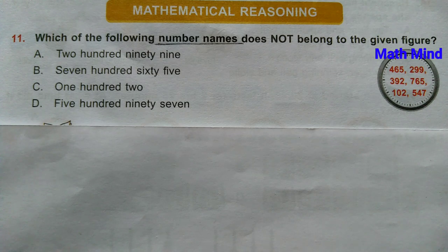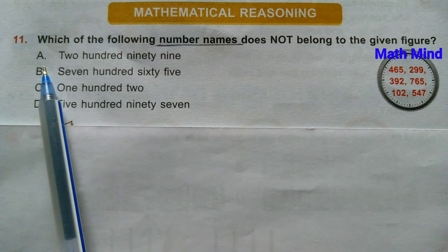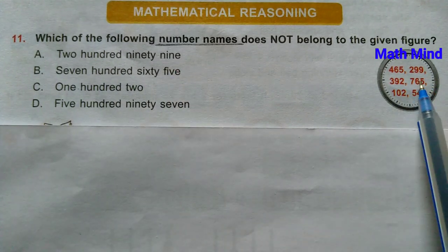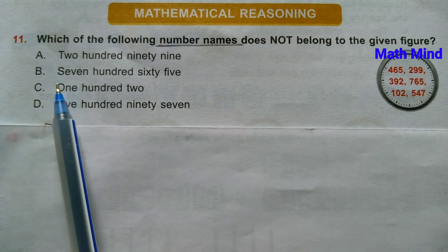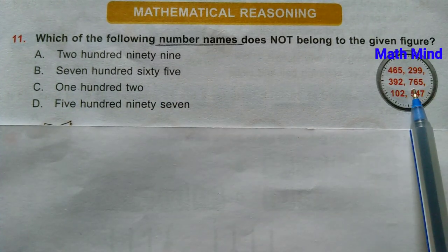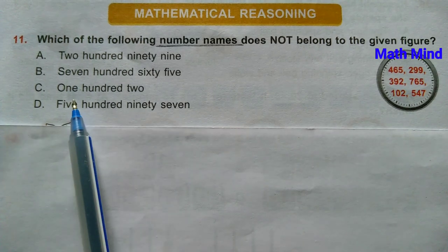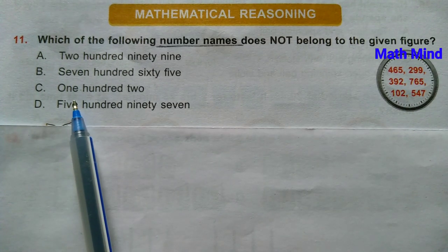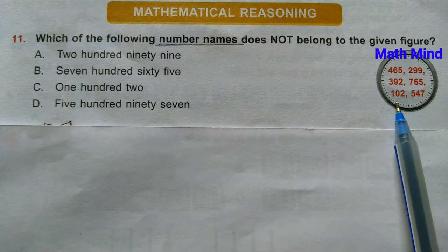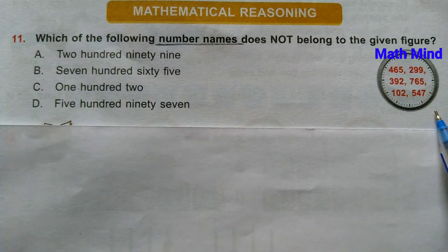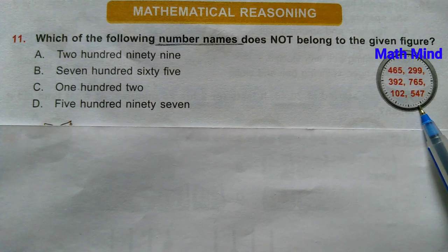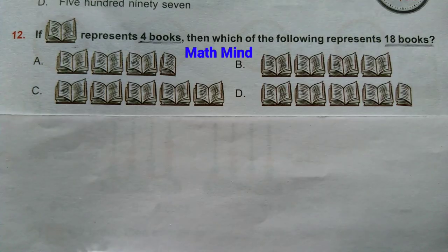Mathematical Reasoning, Question number 11: Which of the following number names does not belong to the given figure? Option A is 299, option B is 765, option C is 102, but option D, 597, is not represented here. So option D is correct.